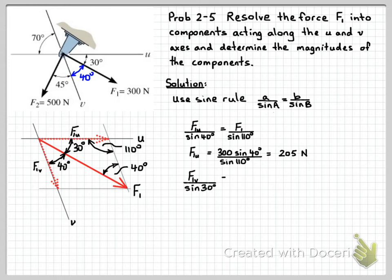Let's do the same thing for F1v. Here, F1v, its opposite angle is 30 degrees. So it will be F1v over sine 30. And we can just use the same ratio from the previous example: F1 over sine 110.